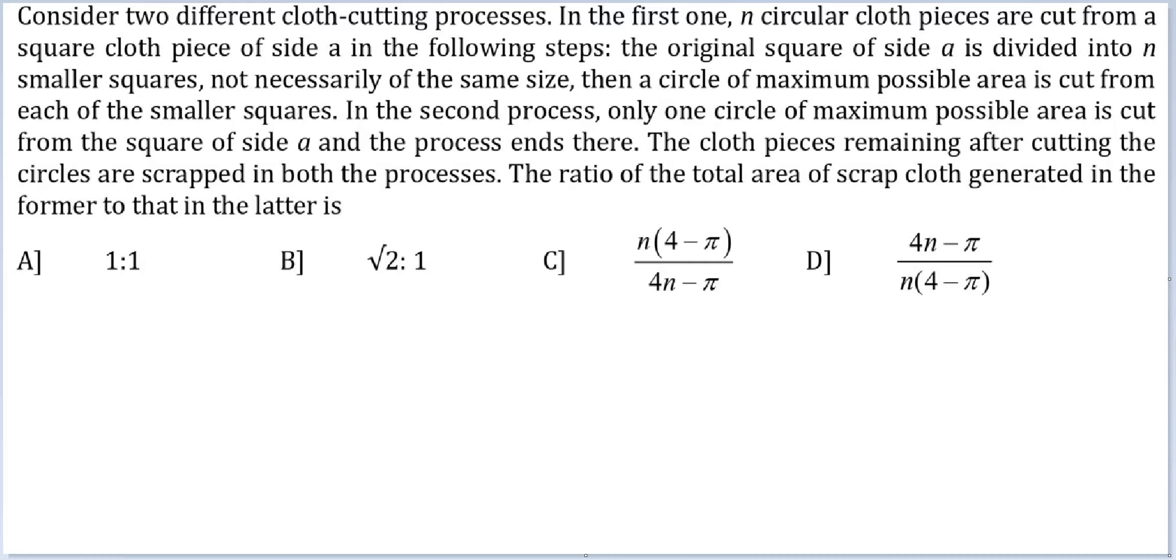In the second process, only one circle of maximum possible area is cut from the square of side A and the process ends there. The cloth pieces remaining after cutting the circles are scrapped in both processes. The ratio of total area of scrapped cloth generated in the former to that in the latter.